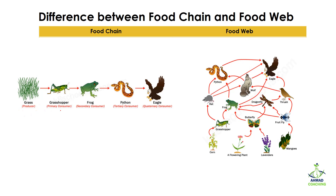In the food chain example: grass eaten by grasshopper, grasshopper eaten by frog, frog eaten by python, python eaten by eagle. In the food web example: different plants — corn, flowering plants, lavender, mangoes — and then the fruit fly visits mangoes, the fruit fly is eaten by the dragonfly, dragonfly eaten by thrush, thrush eaten by eagle. Similarly, the fruit fly can be eaten by frog, frog eaten by python, and python eaten by eagle.